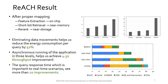After proper mapping of CBIR steps to the compute hierarchy, we saw that eliminating data movements helps reduce the energy consumption per query by half. The asynchronous running of the application across three different compute levels helped us achieve a 4.5x throughput improvement, and for query response time, which is important in real-time scenarios, we saw more than 2x improvement.